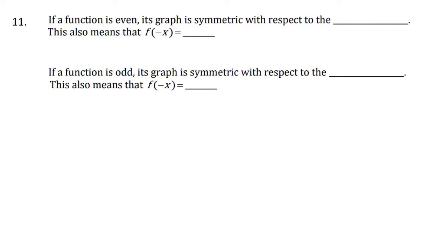For the next part, filling in the blanks: if a function is even, the graph is symmetric with respect to the y-axis, which also implies that f(−x) equals f(x). If a function is odd, the graph is symmetric with respect to the origin, and f(−x) equals the opposite of the original function, or negative f(x).